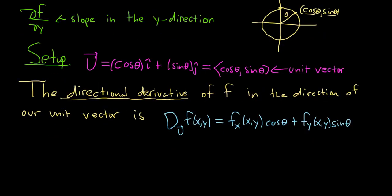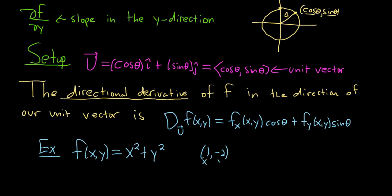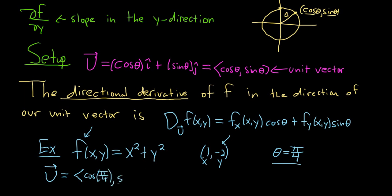Let's do a simple example. We have f(x, y) = x² + y², our point is (1, -2), and our angle θ is π/4. We want the directional derivative of this function in the direction of θ at this point. So first, our unit vector is ⟨cosine(π/4), sine(π/4)⟩ = ⟨√2/2, √2/2⟩.